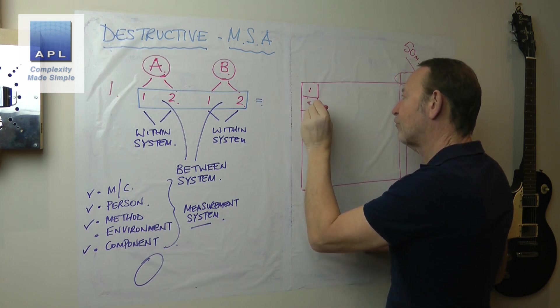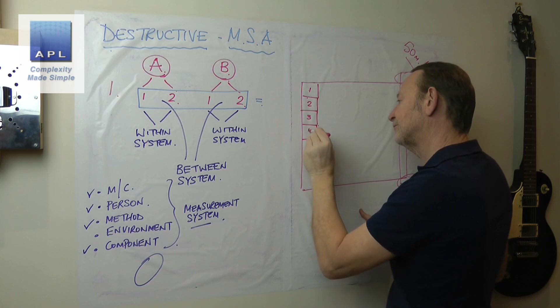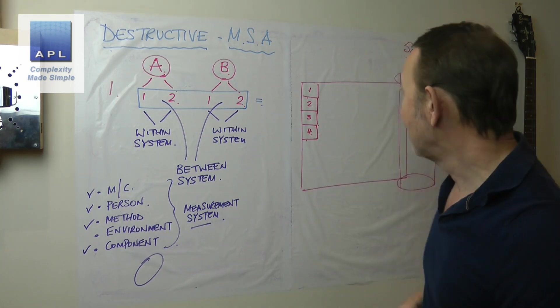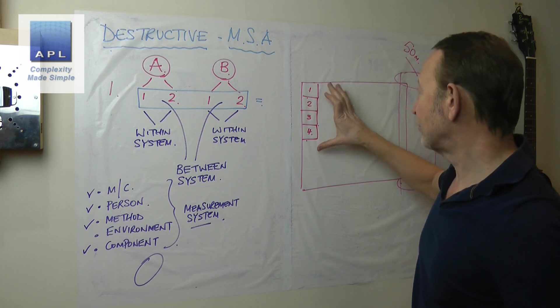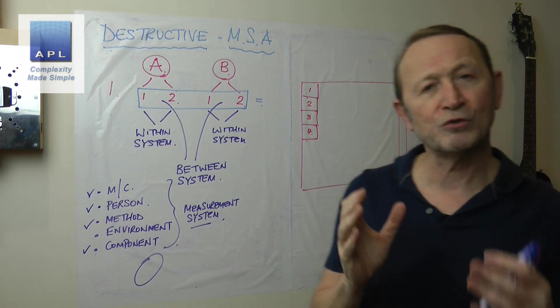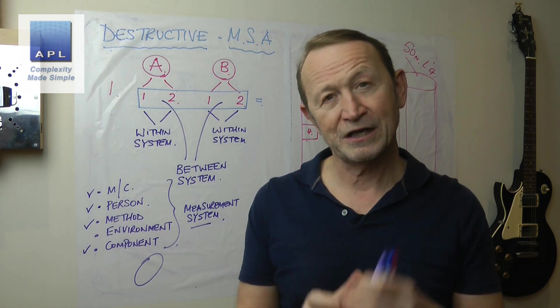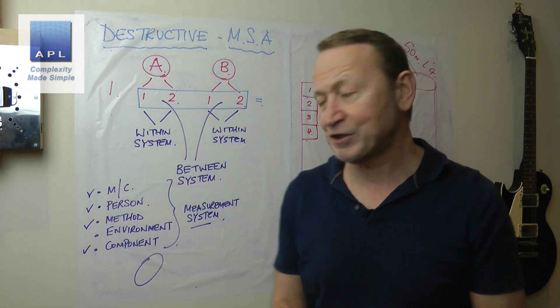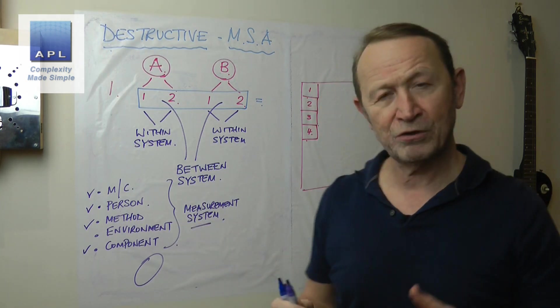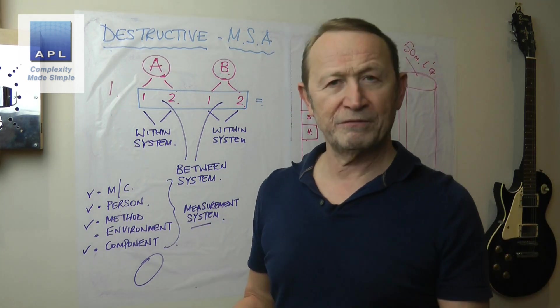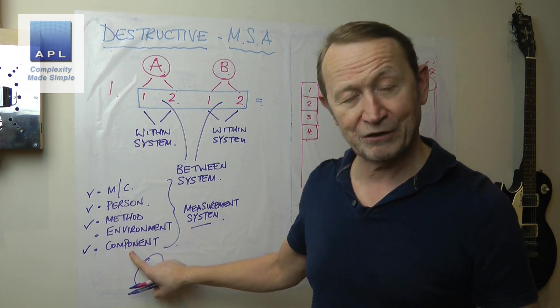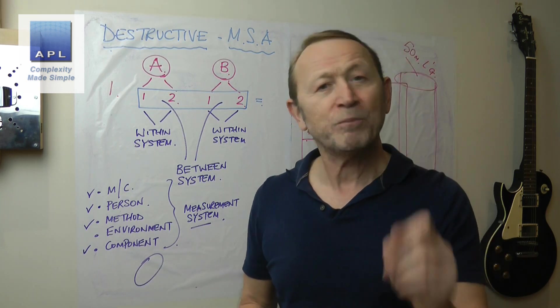So what you would do here is you would take your four pieces right next to one another like that, and because they're right next to one another we are going to assume that the piece-to-piece variability is relatively small. Now people say to me, yeah but when I get a problem it could be piece-to-piece variability.